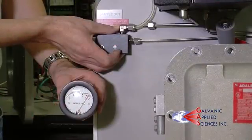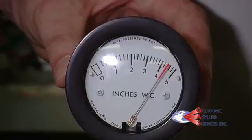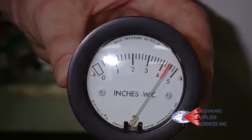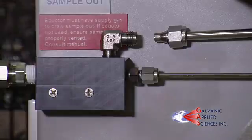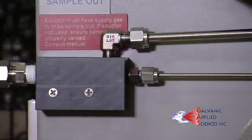If you achieve a minimum of 3 inches of water column of pressure, you have adequate suction. Detach the pressure gauge and reattach the analyzer vent line. The procedure is finished.